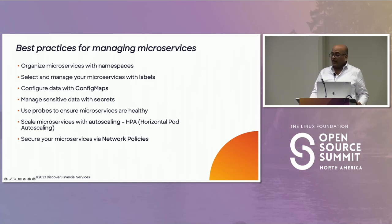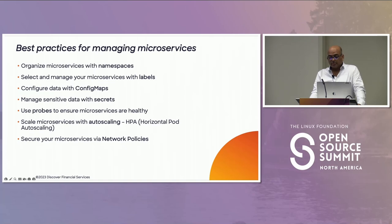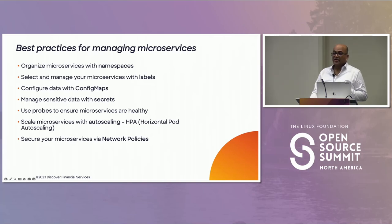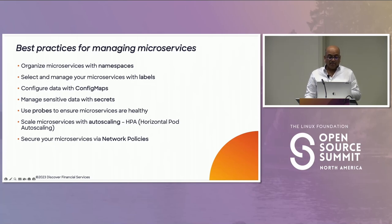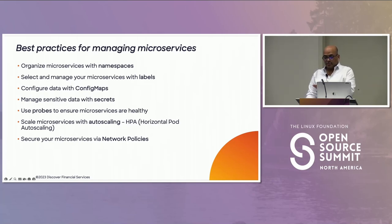Use labels to select and manage your microservices. Labels are key-value pairs attached to Kubernetes resources and are used to select and manage those resources. You can group and manage microservices based on common characteristics — such as release, environment, tier (web, database, middle tier). Labels can also be used to control access using RBAC. ConfigMaps allow you to separate configuration data from application data — if you make a configuration change, you don't have to rebuild your whole pipeline. Secrets are similar to ConfigMaps except they store sensitive data.